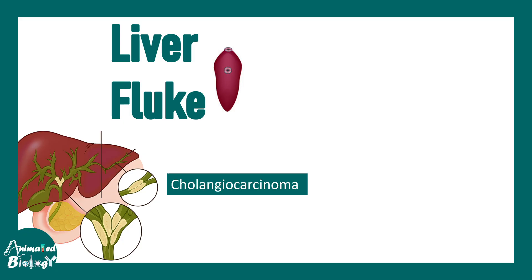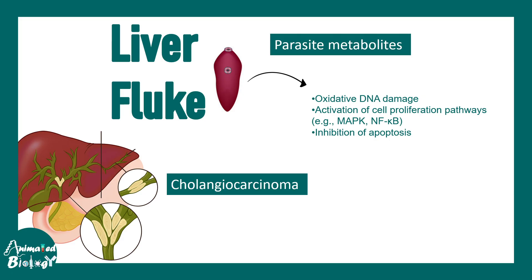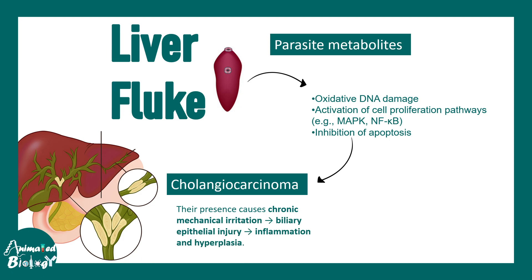Next, a different kind of organism — the liver fluke — is known to be associated with cholangiocarcinoma, meaning carcinoma of the bile duct. These parasites secrete several metabolites that lead to oxidative DNA damage and aberrant activation of signaling pathways like MAP kinase and NF-kappa B, which inhibit apoptosis and regulate growth signaling. Dysregulation of these pathways, driven by hyperinflammation, ultimately leads to cholangiocarcinoma.